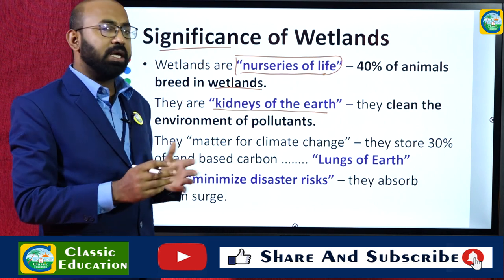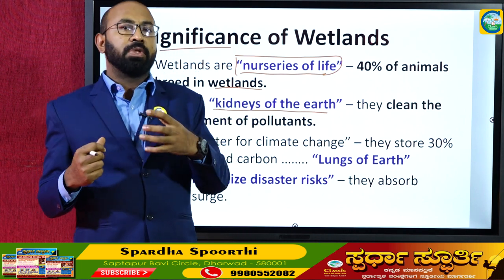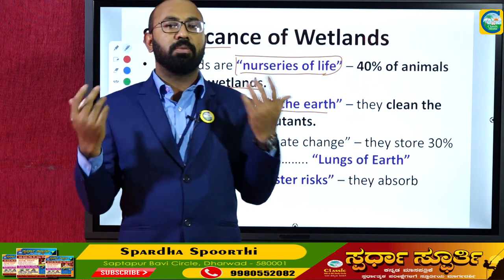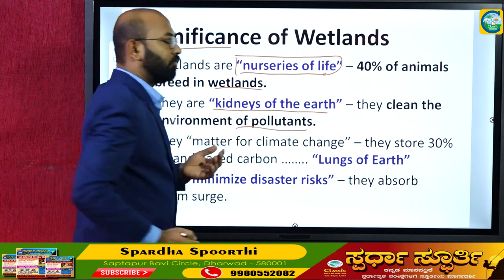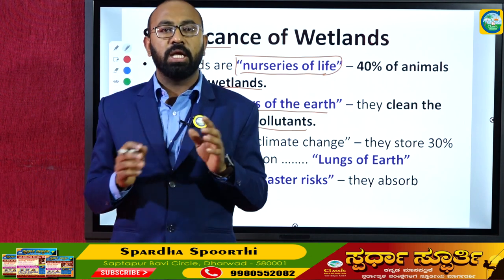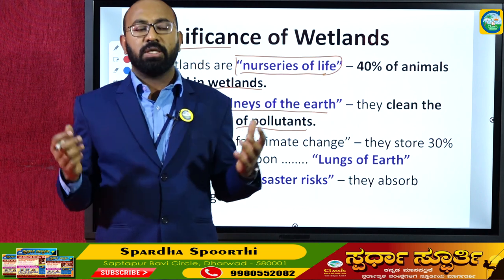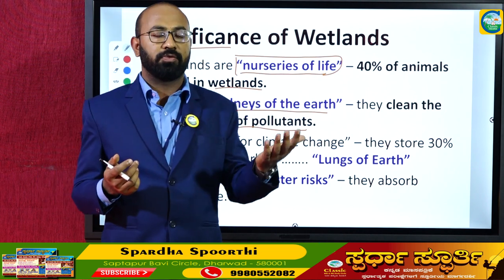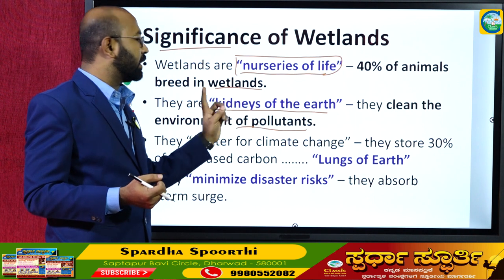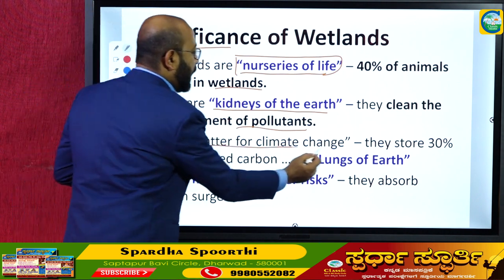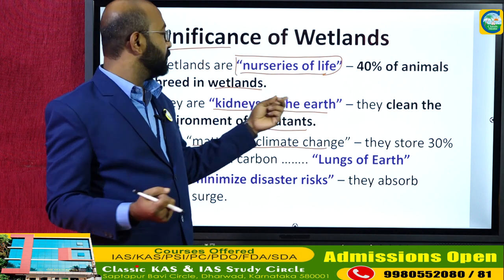Wetlands are also called the kidneys of the earth. Just as kidneys purify blood by removing impurities, these wetlands act as cleaning agents — they clean the environment from pollutants. Due to increased population, urbanization, and industrial activity, we emit more pollutants into the atmosphere, and these wetlands absorb those pollutants, acting as kidneys of the earth.